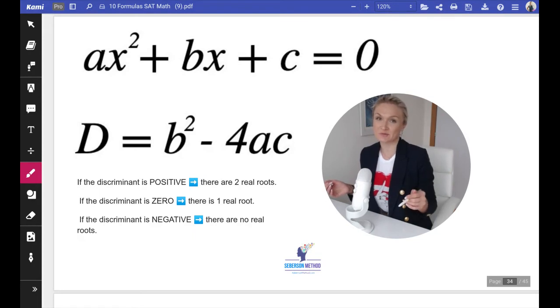We cannot take a square root out of a negative number. Therefore, if the discriminant b squared minus 4ac is negative, then you have two non-real or imaginary solutions. If your discriminant is equal to zero, you're going to have one solution, because there's no difference between adding a zero and subtracting a zero.